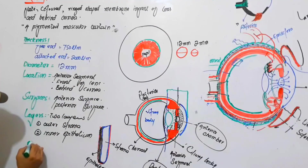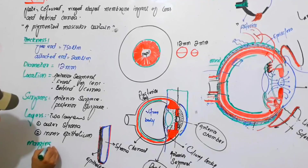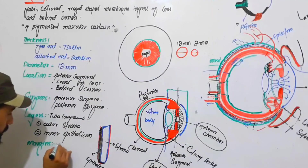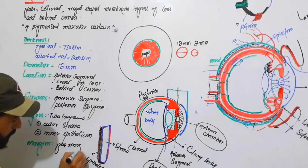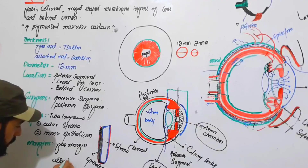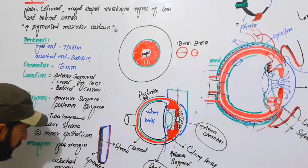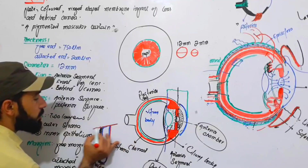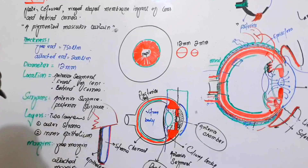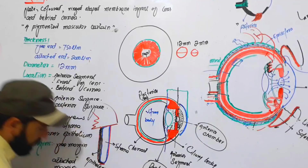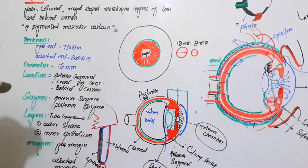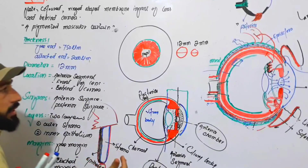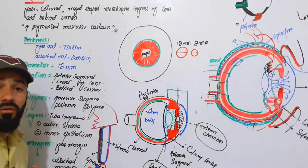The iris has two margins: the free margin and the attached margin. The free margin is at the pupillary end — the central opening. The attached margin is where the iris is attached to the ciliary body. These were some important points regarding the iris. Next, we will go into the detailed structure of the iris.